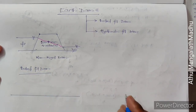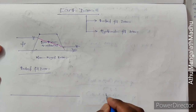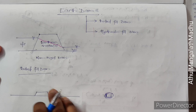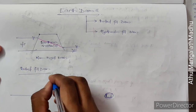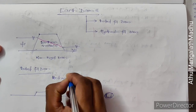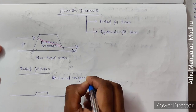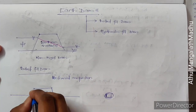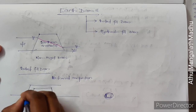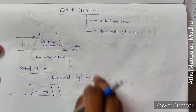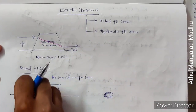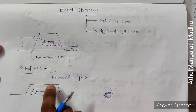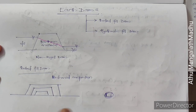In a rolled fill dam, we excavate earthen materials, transport them to the construction site, dump them, and compact them mechanically. This is done in layers — after compacting one layer, additional material is placed, mechanically compacted again, and the process repeats. This dam built by mechanical compaction layer by layer is called a rolled fill dam.